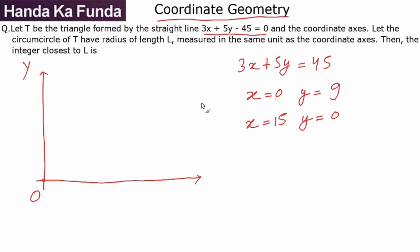This line will cut the y-axis at a point 0 comma 9, so let's say it is somewhere here, 0 comma 9. It will cut the x-axis at 15 comma 0, so let's say that particular point is here, 15 comma 0.